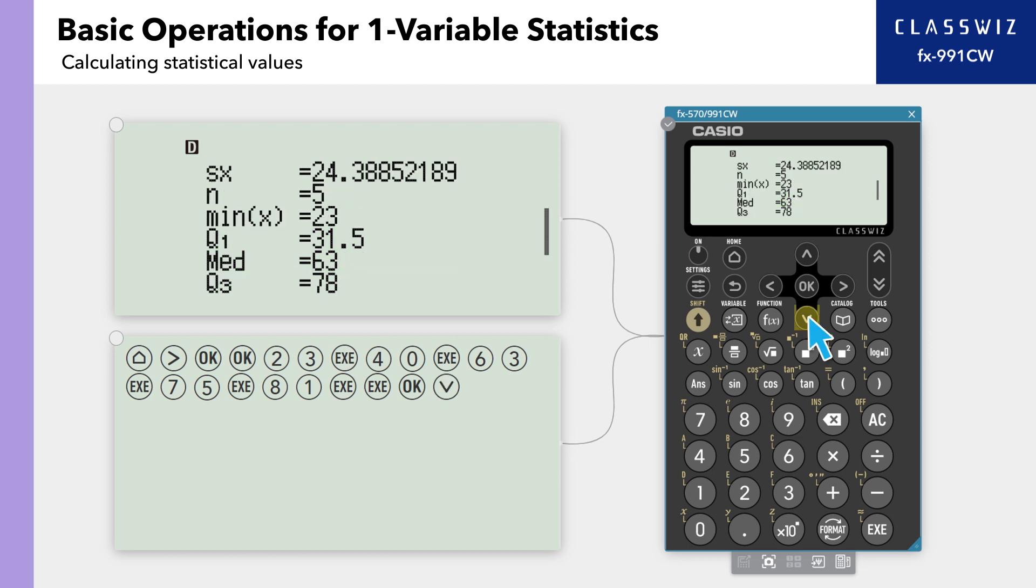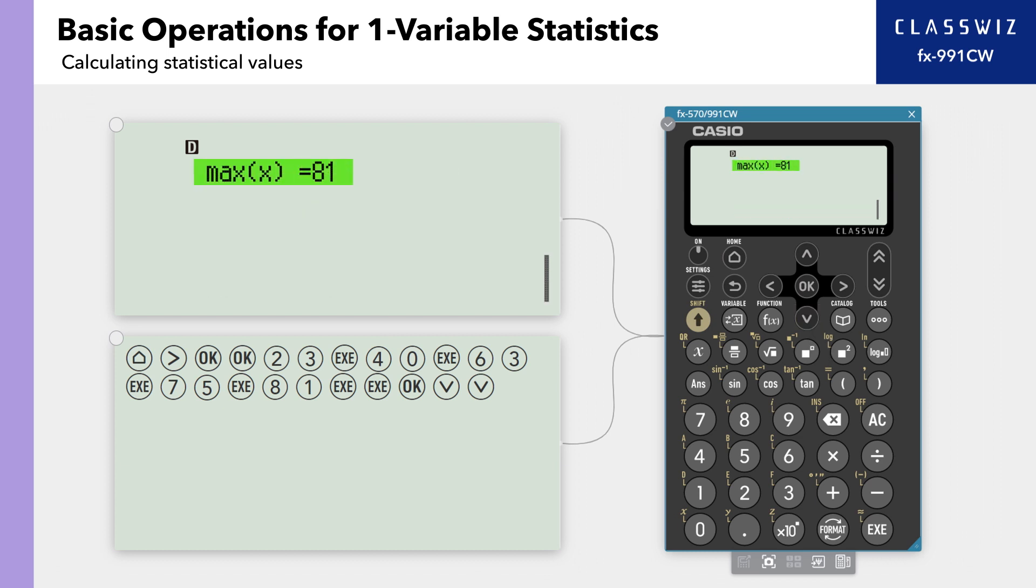You can scroll down to see that the minimum value is 23, the first quartile is 31.5, the median is 63, the third quartile is 78, and the maximum value is 81.